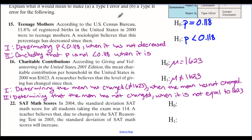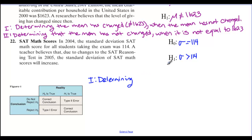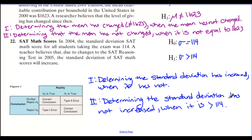For number 22, talking about standard deviation: H-naught was sigma equals 114, and H-one was sigma greater than 114. The type one error is rejecting H-naught — concluding the standard deviation has increased when in fact it has not. The type two error: failing to reject — determining it has not increased when in fact it has. That covers our type one and type two errors.